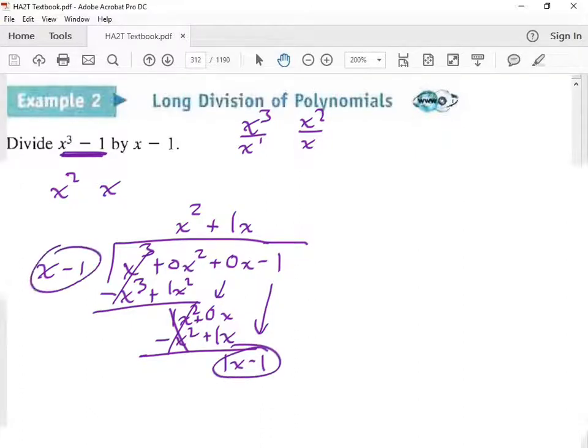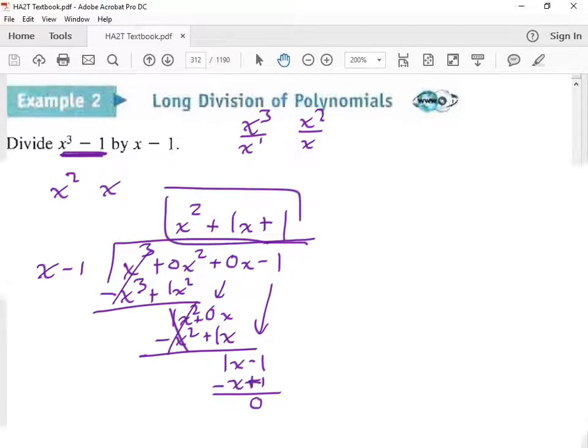I have x minus 1 and x minus 1. So since those are the same, you would get 1. You go x minus 1. Then you subtract it. You get remainder of 0. So this is our answer right there.